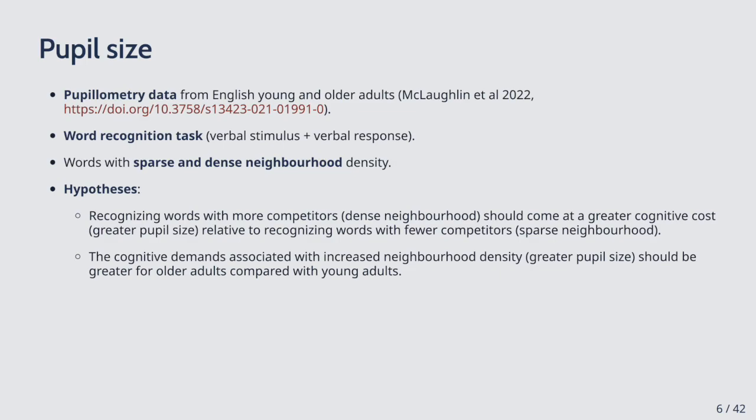This greater cognitive demand was expected to occur across the board in young and older adults. More specifically, the cognitive demands associated with increased neighborhood density should be greater for older adults compared to young adults. Since we only have an hour, I won't be able to show you the full model, but I can refer you to the full materials if you want to see what the final model would look like.